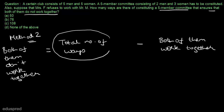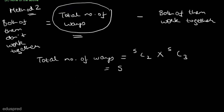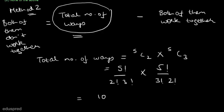First, let's calculate the total number of ways to form a 5-member committee with no conditions. Out of 5 men we select 2, so it's 5C2; and out of 5 women we select 3, so it's 5C3. Solving this: (5!/2!3!) × (5!/3!2!) = 10 × 10 = 100. So there are 100 ways in which we could form a 5-member committee consisting of 2 men and 3 women.